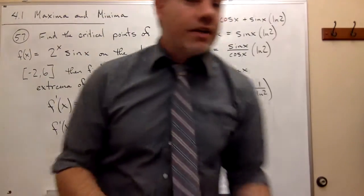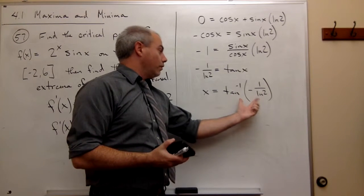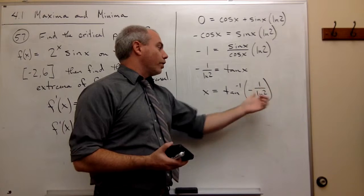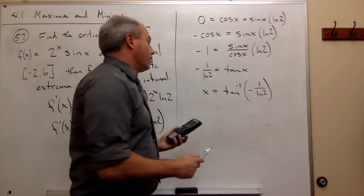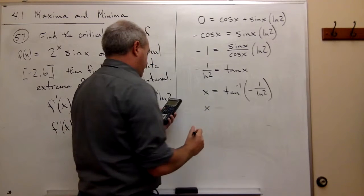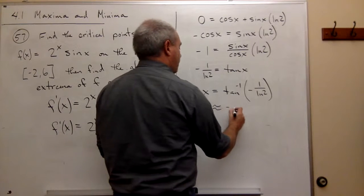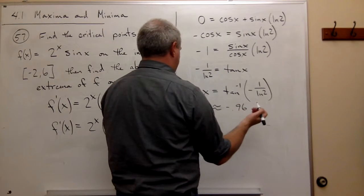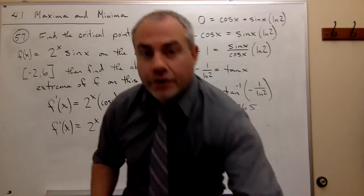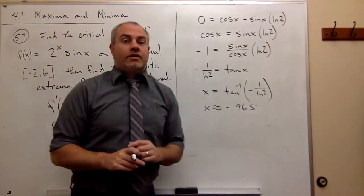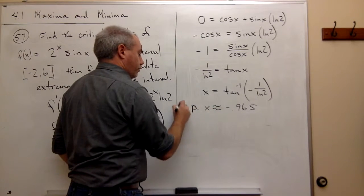Plug things in here. This is not something that should be intuitively obvious to you, what tan inverse of negative 1 over ln of 2 is. So let's pull out the calculator and see what that is. So I do that, and I get that x is approximately negative 0.965, let's call it. So I really have three things that I need to test here. I have a critical point. So this is my critical point.